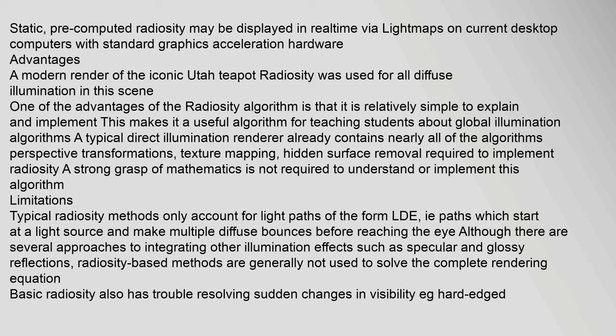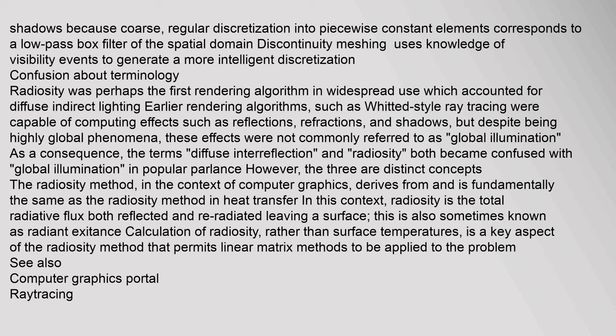Limitations: Typical radiosity methods only account for light paths of the form LD*E — paths which start at a light source and make multiple diffuse bounces before reaching the eye. Although there are several approaches to integrating other illumination effects such as specular and glossy reflections, radiosity-based methods are generally not used to solve the complete rendering equation. Basic radiosity also has trouble resolving sudden changes in visibility, such as hard-edged shadows, because coarse regular discretization into piecewise constant elements corresponds to a low-pass box filter of the spatial domain. Discontinuity meshing uses knowledge of visibility events to generate a more intelligent discretization.